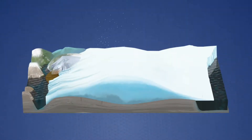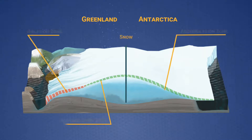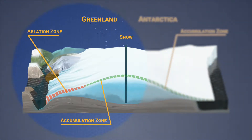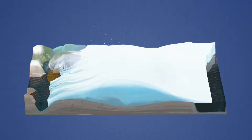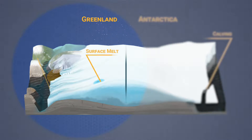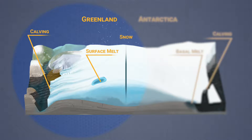When an ice sheet is in balance, the amount of snow coming in is equal to the amount of melt and calving that is going out. In Greenland, unlike Antarctica, we have a situation where we have large amounts of melt and large amounts of calving, so that Greenland is losing mass regularly every melt season. And the accumulation during the winter does not balance the mass loss that occurs during the summer.